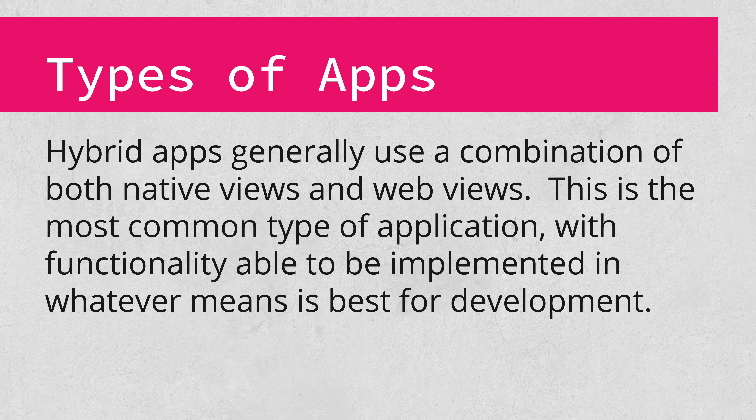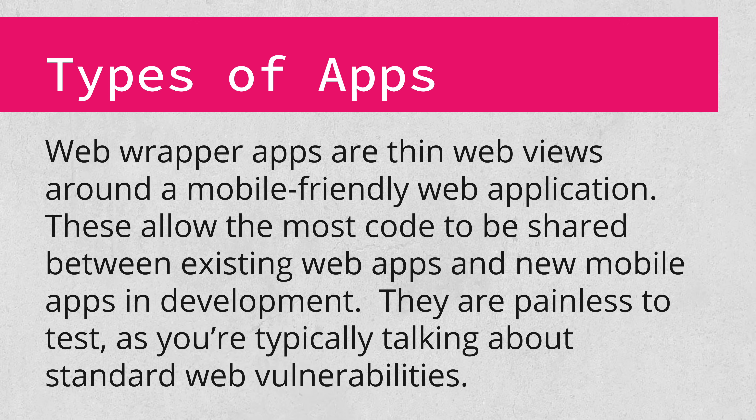Next we have hybrid apps. These are some combination of native UI and web views. This is the most common type of application. It's the easiest to develop, and in large part they're easy to test. Conveniently, many of the web vulns you're most familiar with will apply here. Finally, we have web wrappers. These are exactly what they sound like — the app entry point just opens a mobile-specific web application in a web view. These allow for a ton of code to be shared between your standard web front-end and the mobile-specific bits, and effectively every common web vulnerability applies.